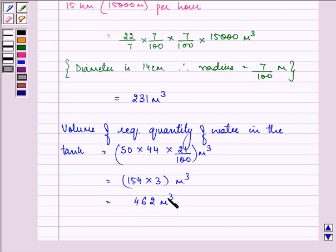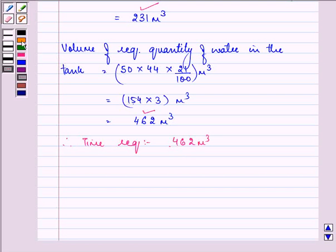Now since this 231 meter cube of water falls into tank in 1 hour, therefore 462 meter cube of water will fall into the tank in time required is equal to 462 upon 231 hours. That is coming out to be 2 hours.